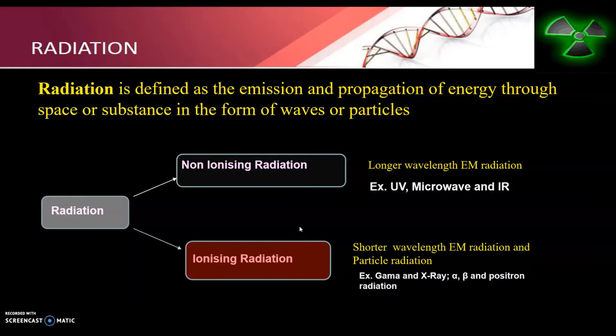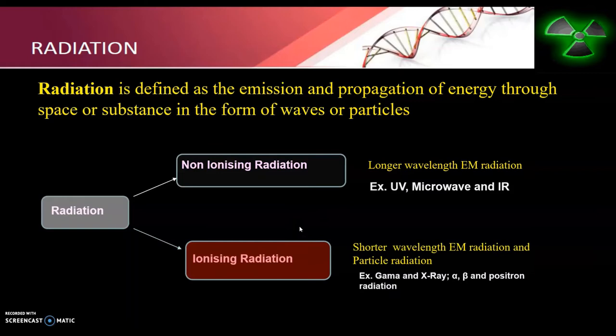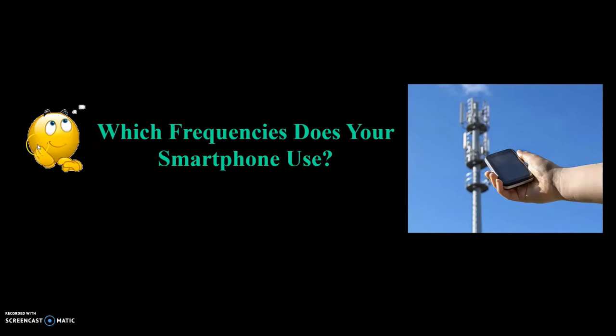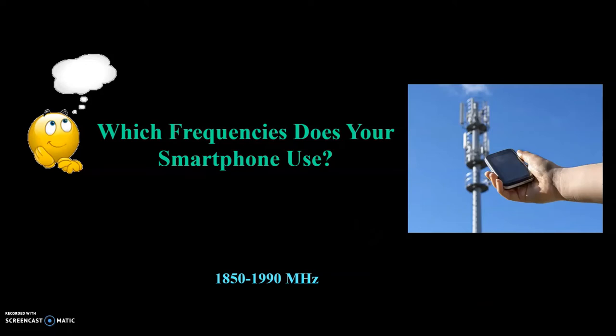Ionizing radiation removes the electron from the atom. This type of radiation is potentially dangerous because it contains higher amounts of energy particles, and prolonged exposure to this type of radiation can lead to radiation sickness. Question for you: which frequency does your smartphone use? The answer is the 1852–1990 MHz region.